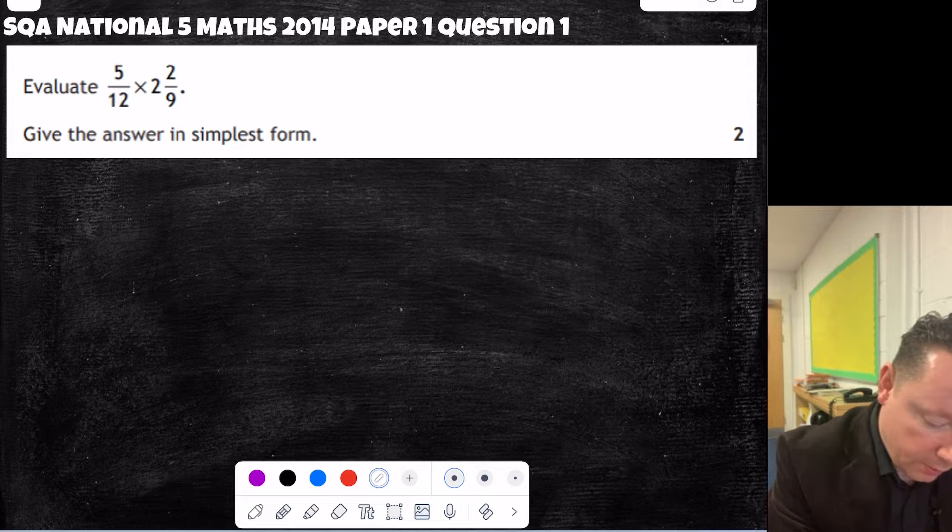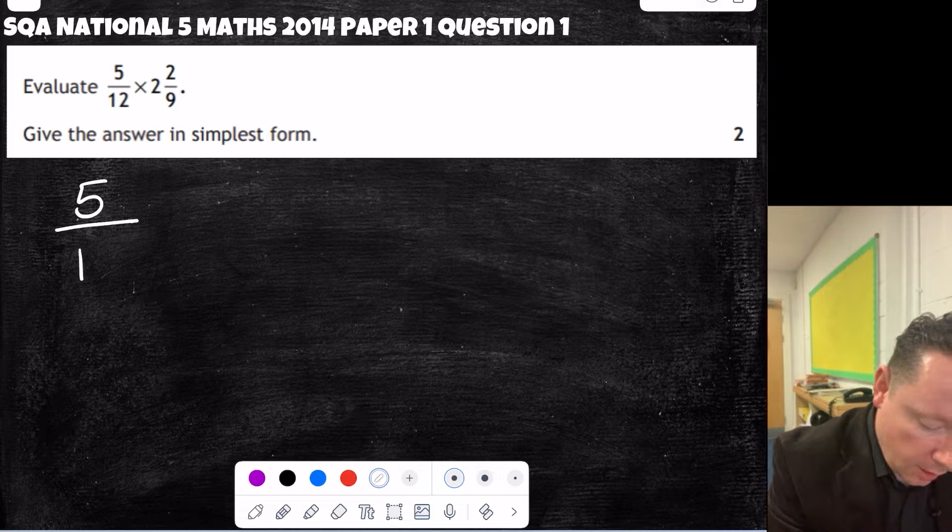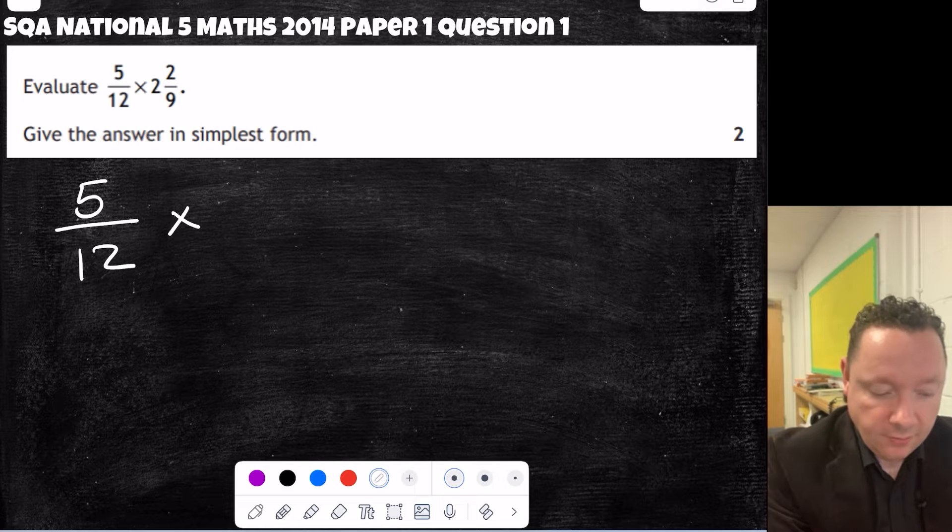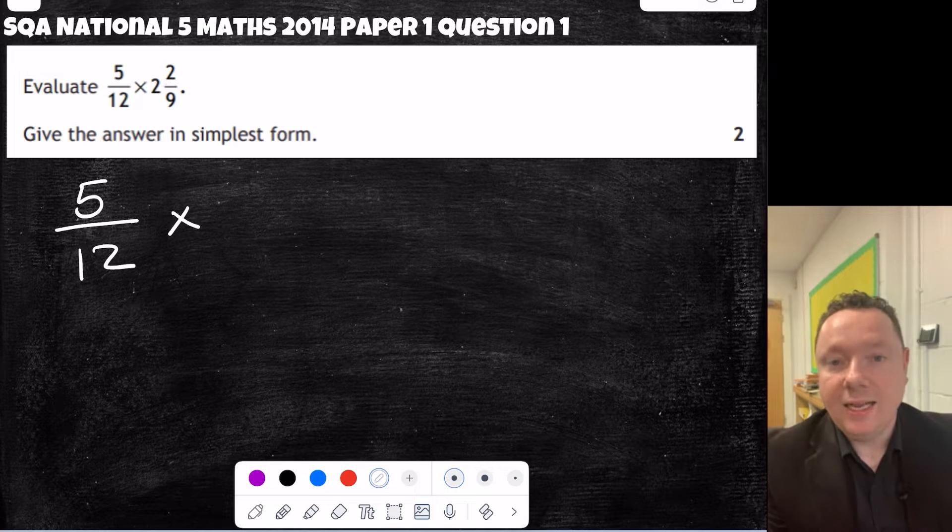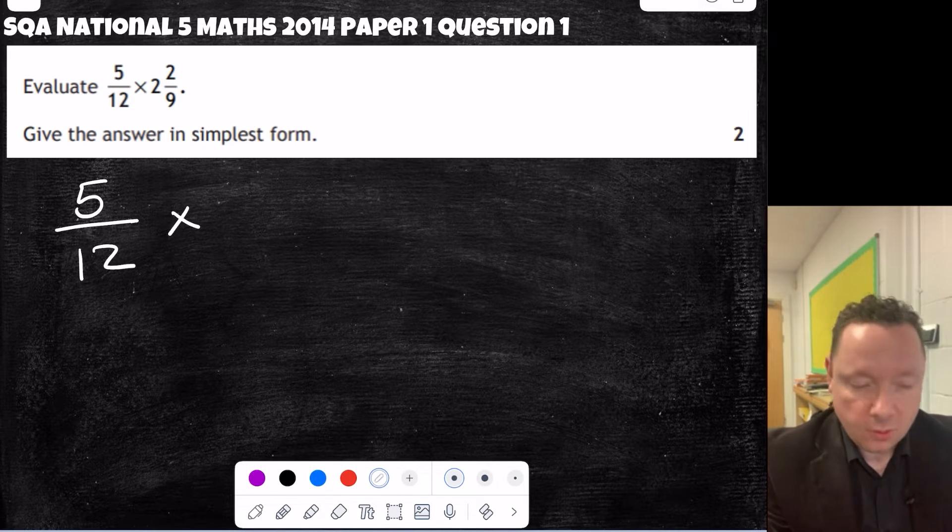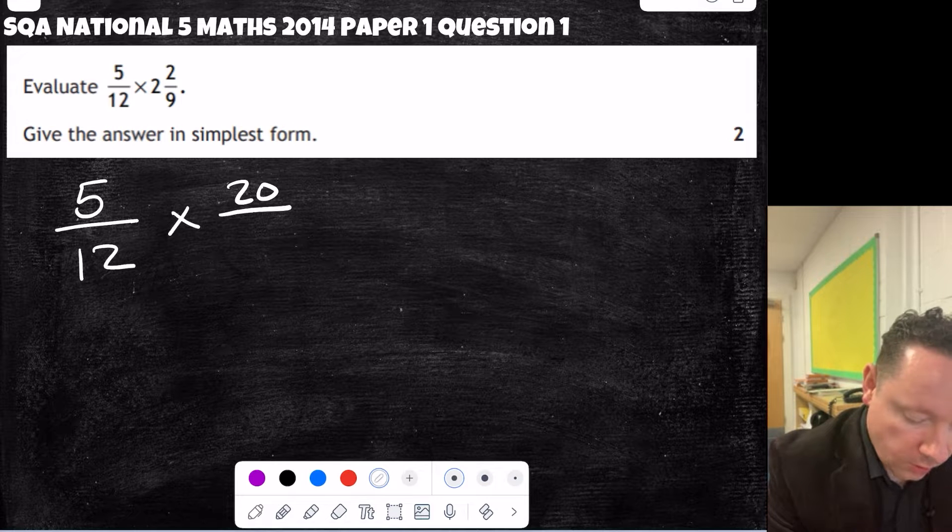When you try to times with a mixed number, the easiest way to do that is to change the mixed number to an improper fraction. So I'm going to keep the 5 twelfths where it is. But I'm going to times by 2 ninths. 2 times 9 is 18, 18 plus 2 is 20. So it's 20 over 9.